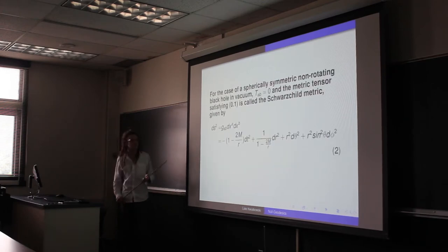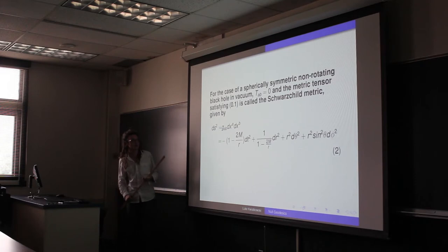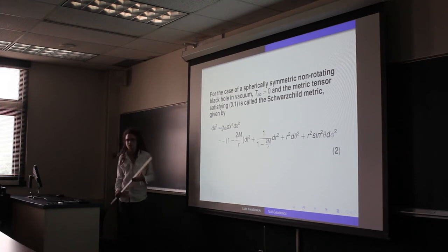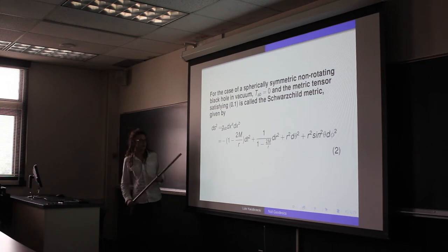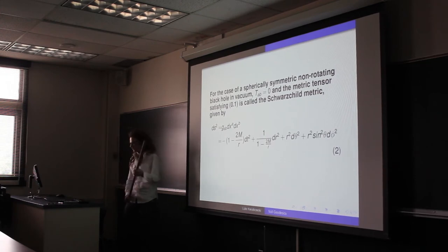So one solution, which is the spherically symmetric solution for a black hole that's not rotating, is known as the Schwarzschild metric, which looks like this. Basically defines an inner product, which we can calculate the length of our vectors.